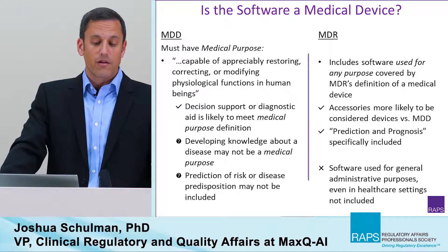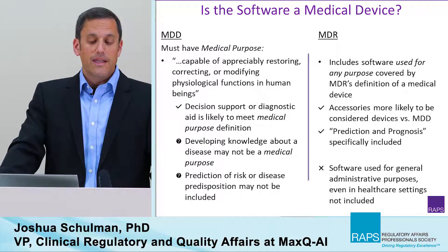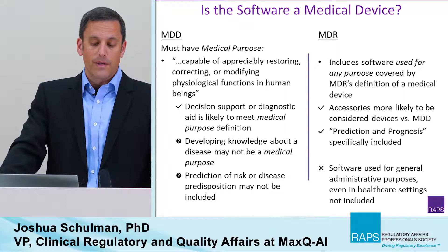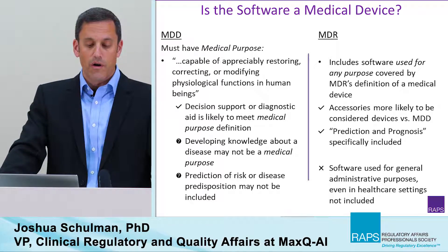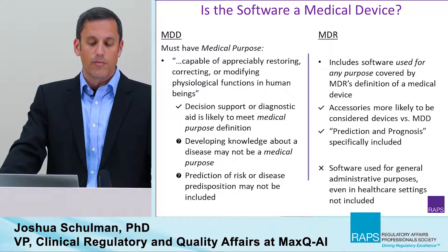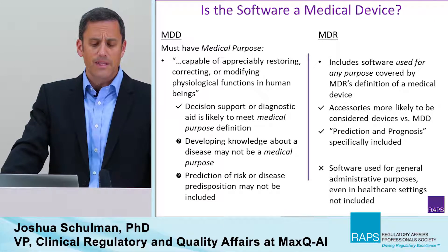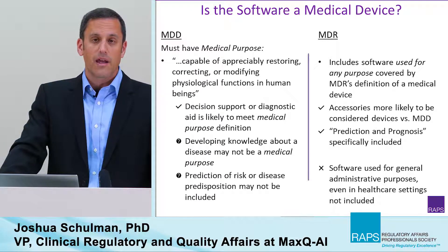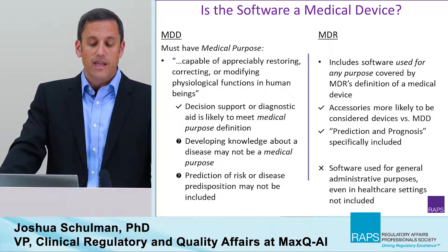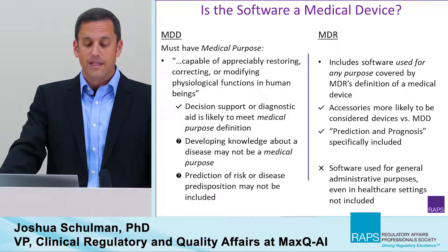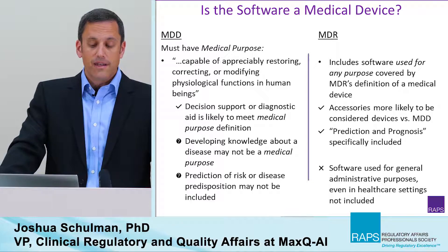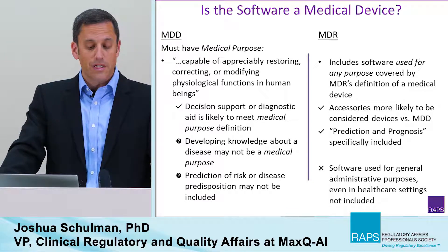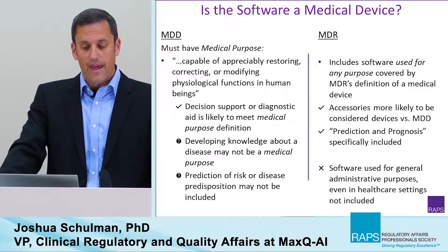Under the existing Medical Device Directive, it needs to have what's known as a medical purpose — a device capable of appreciably restoring, correcting, or modifying physiological function in human beings. When it comes to things like decision support or diagnostic aids, those are likely to meet the medical purpose definition. However, devices that are designed to develop knowledge about a disease or predict risk or disease predisposition may or may not fall under that category.